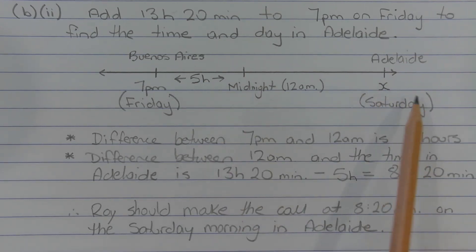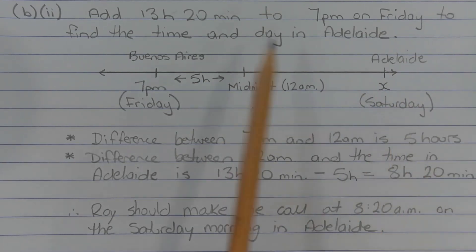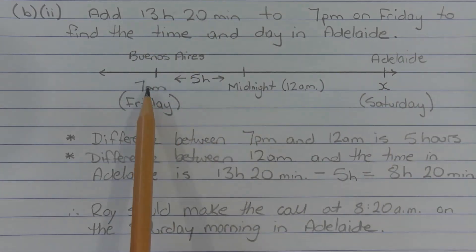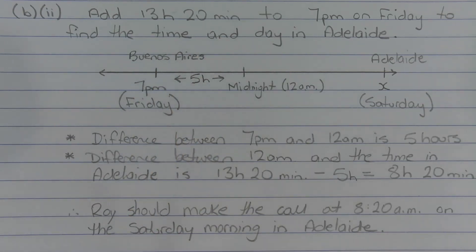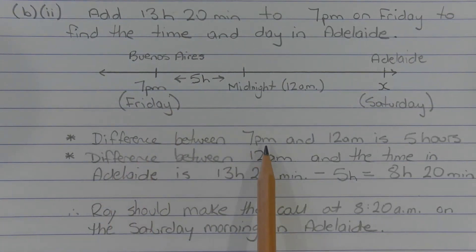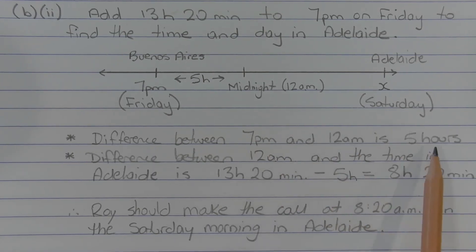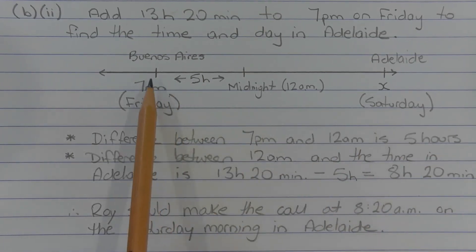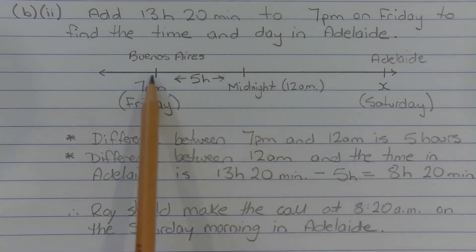It'll be a Saturday because we're adding 13 hours and 20 minutes to 7pm, which will definitely go past midnight. The difference between 7pm and midnight is 5 hours, and that's this gap here.